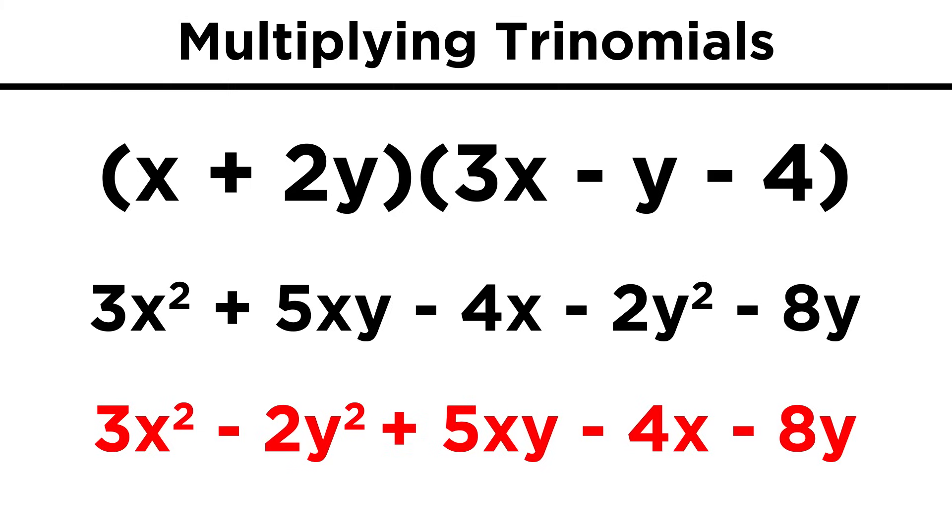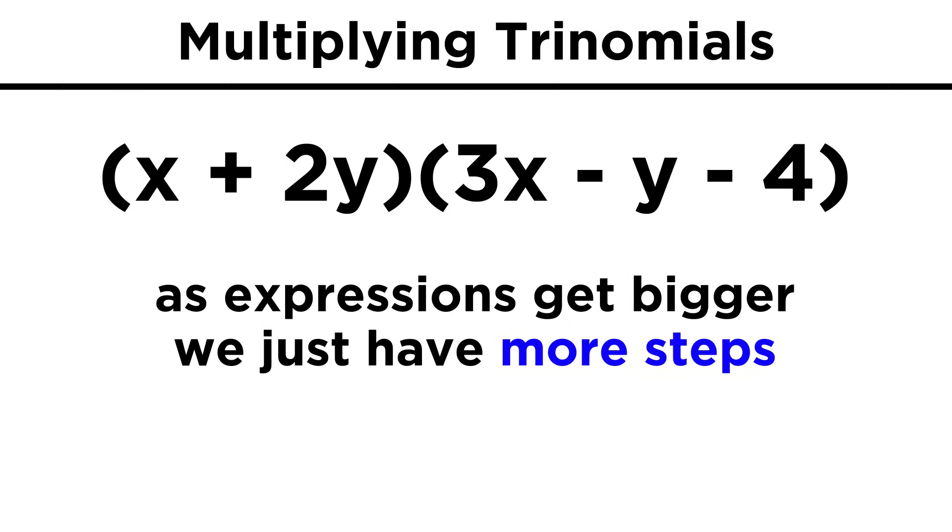Then, we just list according to convention: x squared, then y squared, then xy, then x, then y, and there we have it. So it's not really any harder as the expressions get bigger, just more steps, since we need to use the distributive property more times.